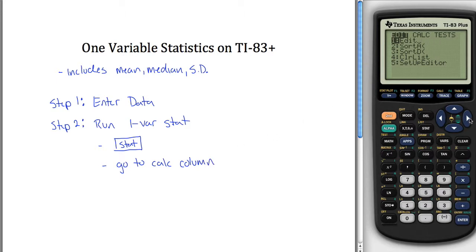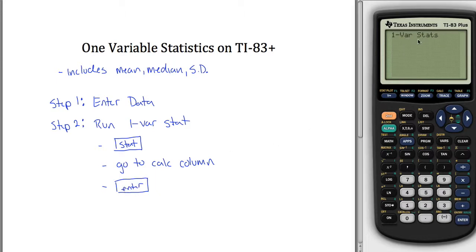So calc column is one to the right. I'll hit this right cursor here and it moves me over here. And then what you want is one variable statistics. So you can just hit enter. And what will pop up will be one variable statistics. Don't hit enter again. You have to make sure that you tell your calculator where you put your data.